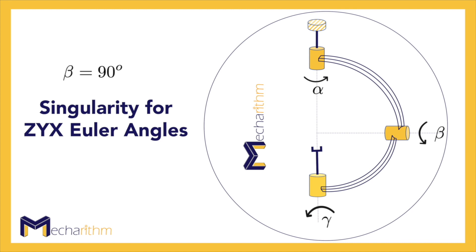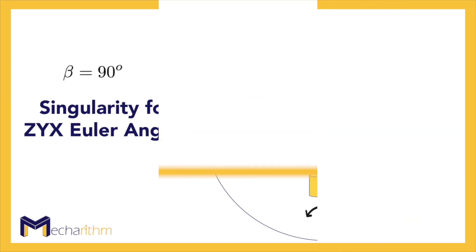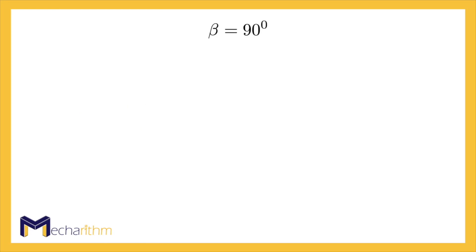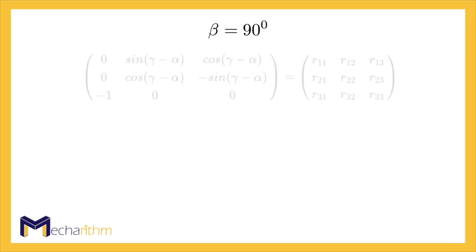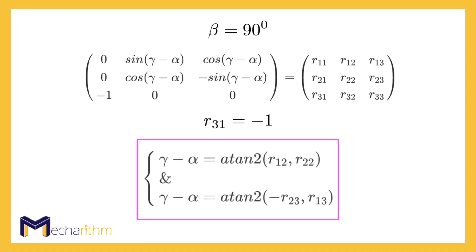Now let's find the expressions for Euler angles for a given rotation matrix R when cosine beta is equal to zero — and thus beta is equal to 90 degrees or minus 90 degrees. When beta is equal to 90 degrees, inserting the value for beta in the expression for the rotation matrix and then equating it to the given rotation matrix, we get this equation. From this equation we can see that the entry in the third row and first column is equal to minus one, and we can find the difference between gamma and alpha with any of these equations. One possible solution is when alpha is equal to zero and gamma can be calculated using any of the equations.